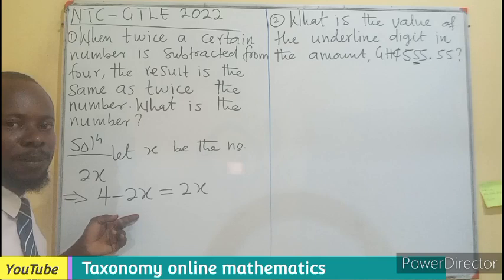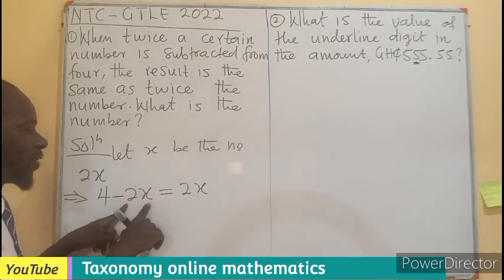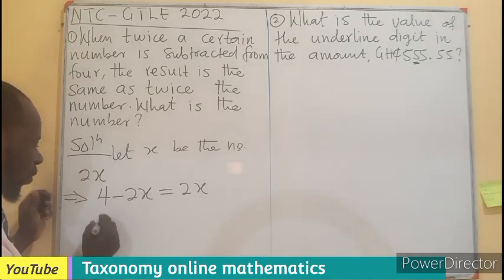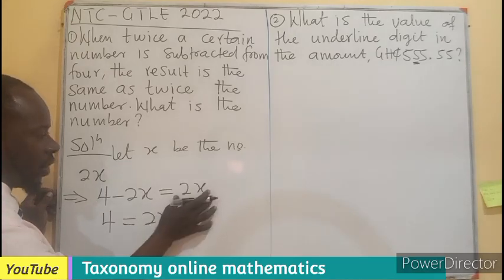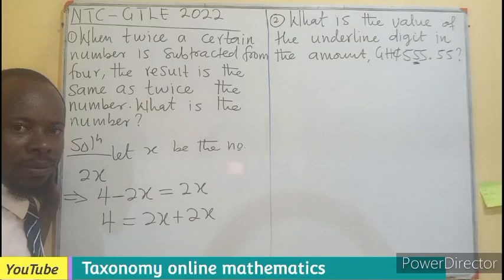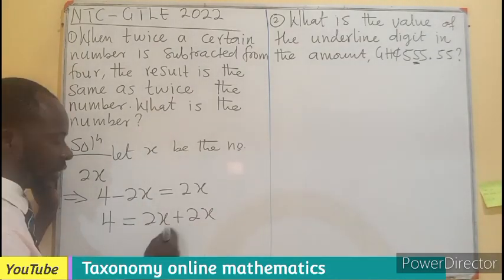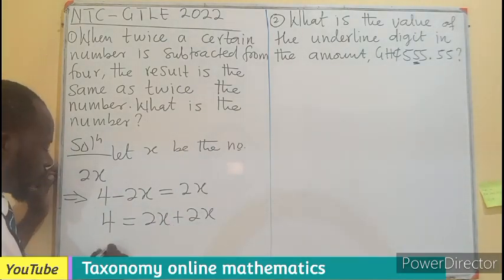I am going to add 2x to both sides so that this value 2x comes to the right. So 4 equals 2x, which is this, then plus another 2x. We can see that 2x plus 2x, meaning 2 apples plus 2 apples will give us 4 apples. So this is 4 equals 4x.